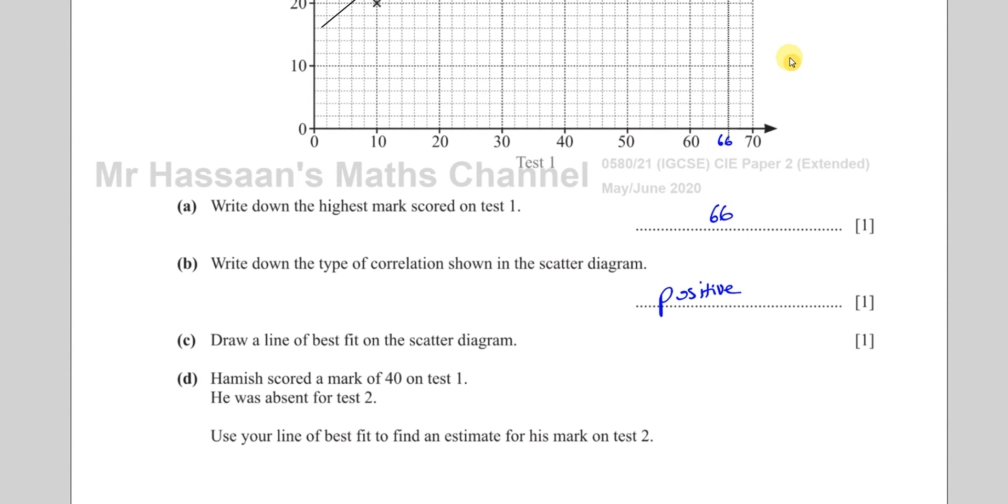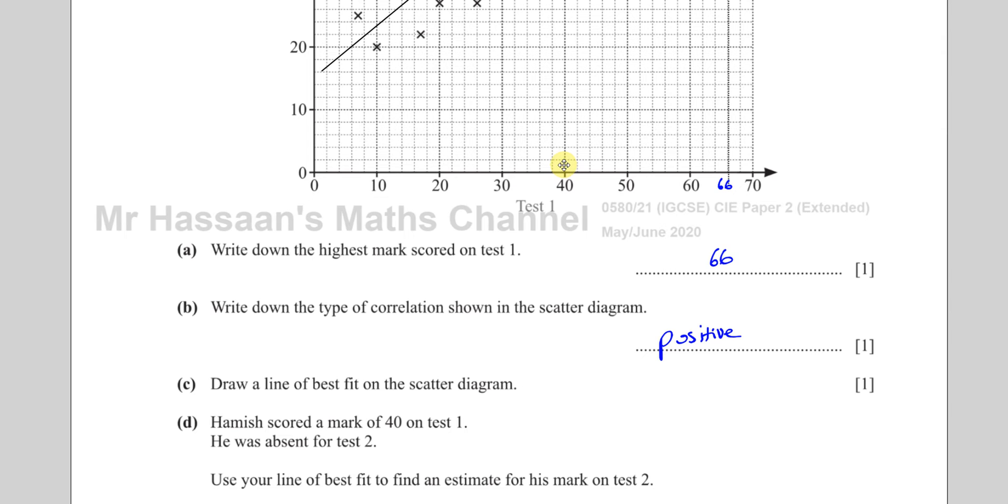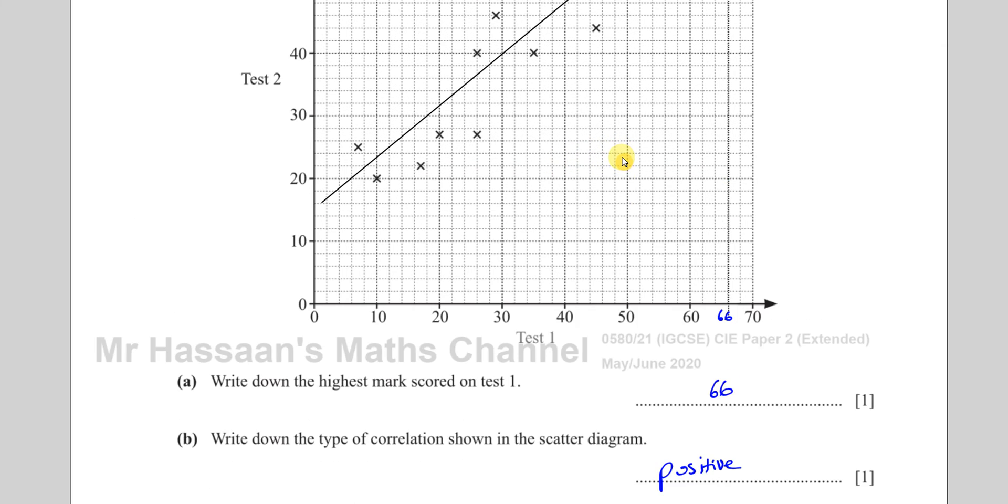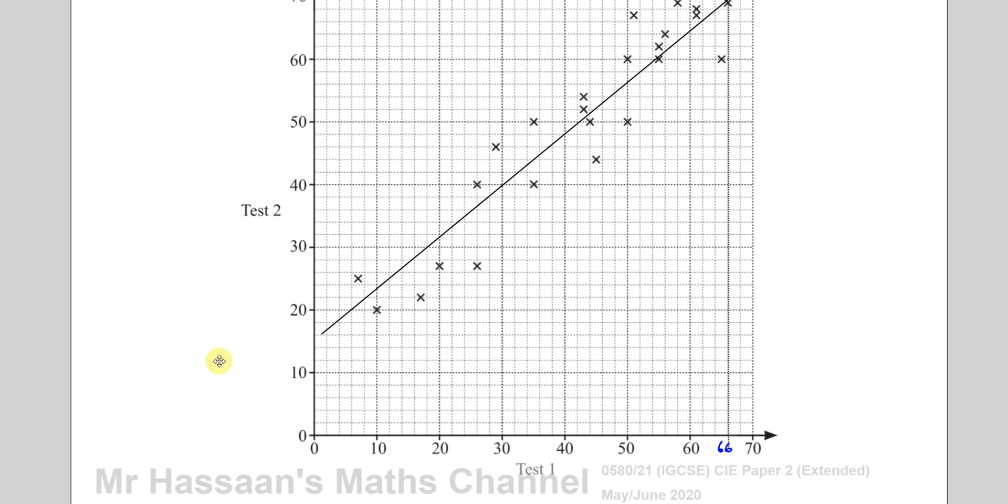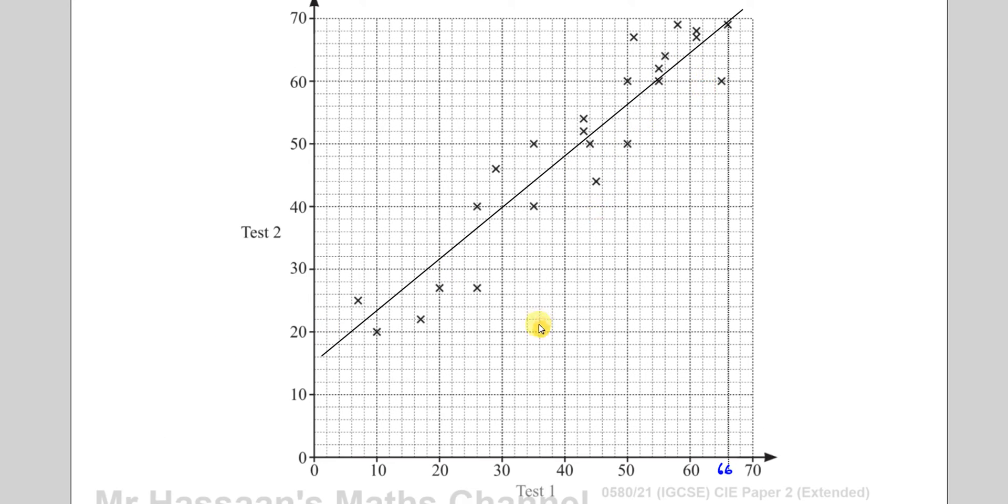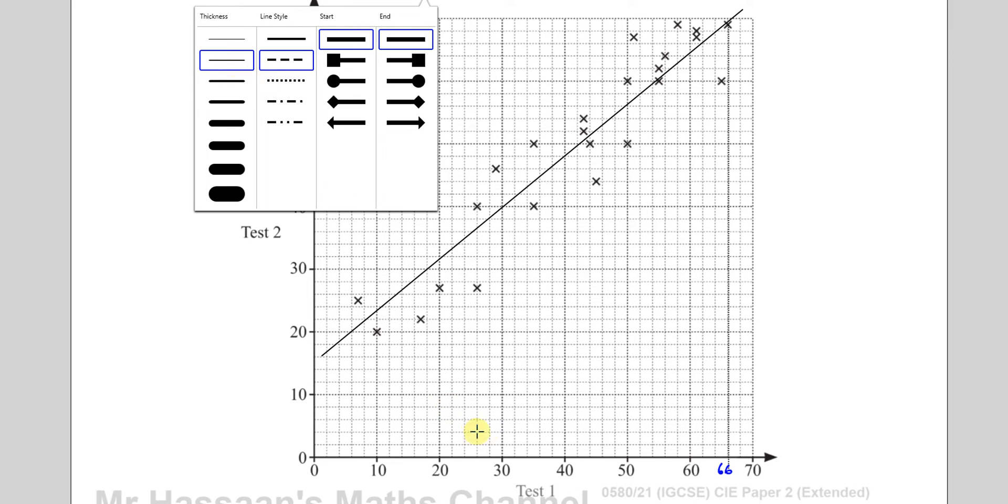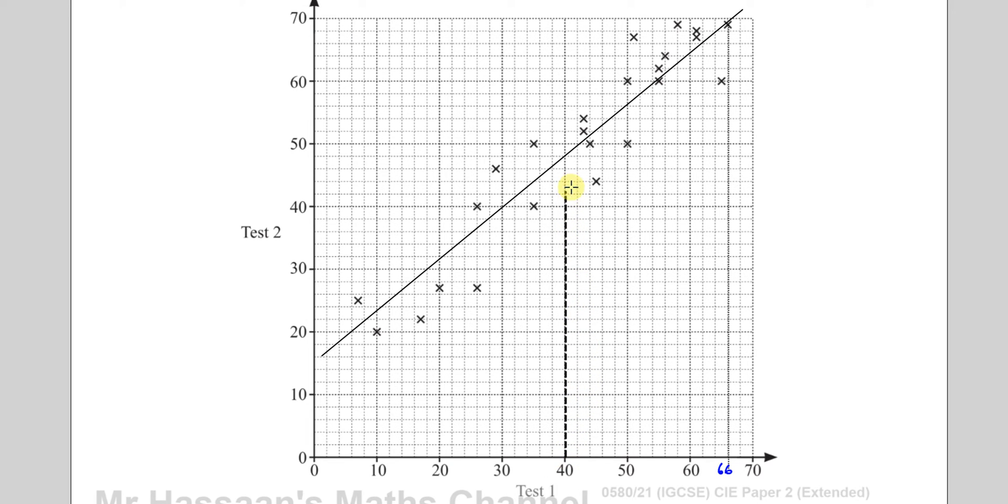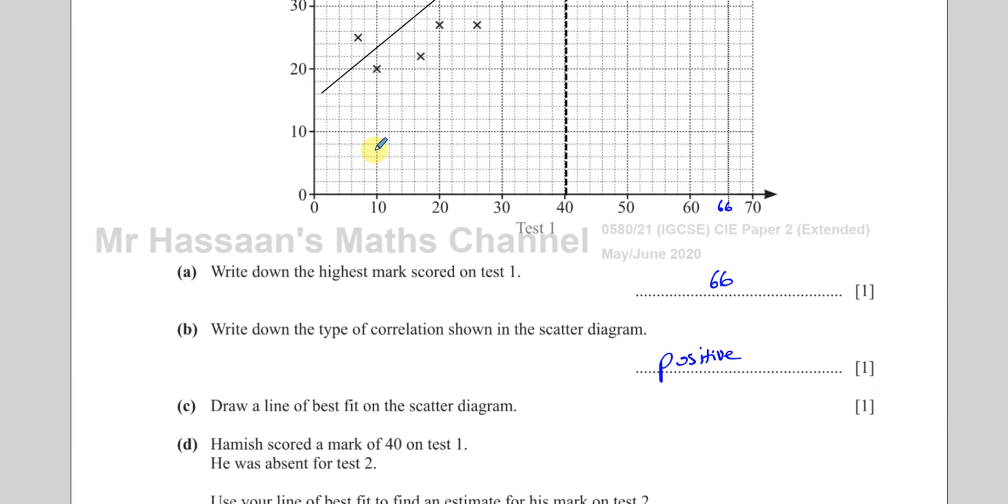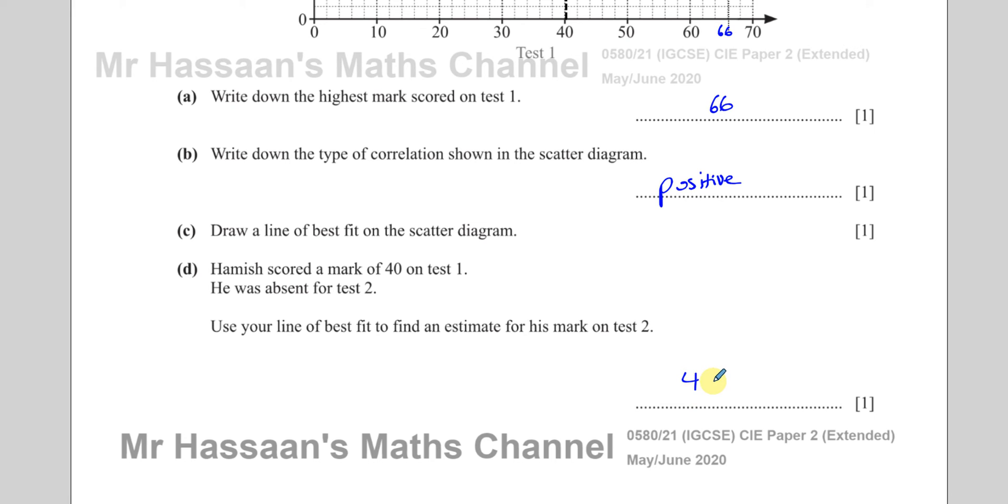Then it says Hamish scored a mark of 40 on test one. He was absent for test two. Use your line of best fit to find an estimate for his mark on test two. I'm going to assume that this is an accurate indication of how somebody would do in test two. What we can do is we can go to his mark on test one and draw a line from there up to the scatter plot and then across. We can see that his mark would be somewhere like 48, because again, this has got the same scale. So that would be 48. You can write your answer down as 48.